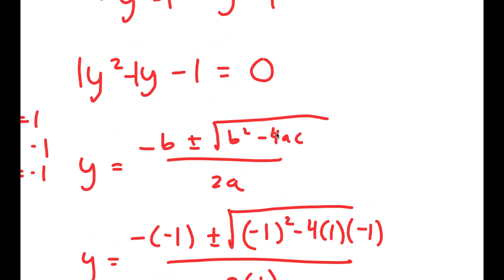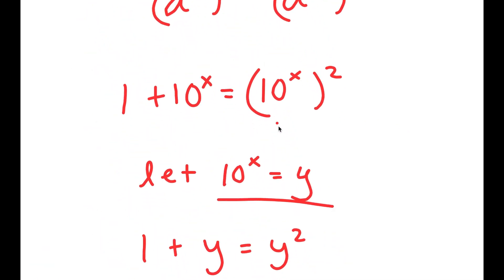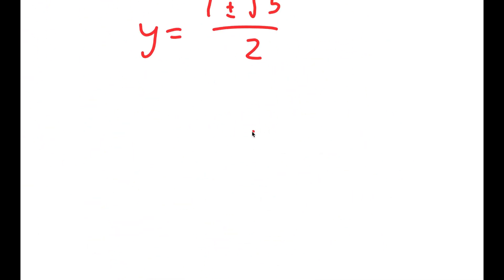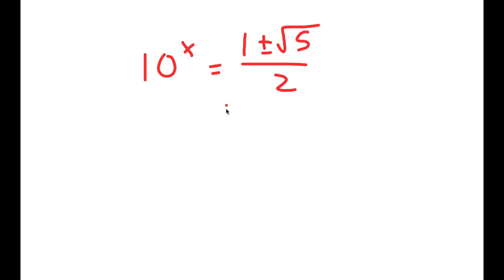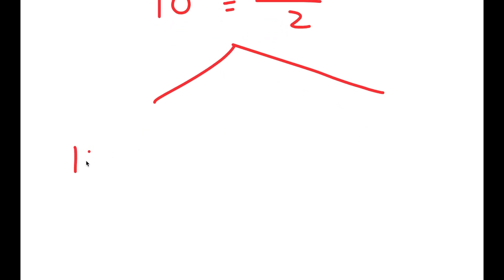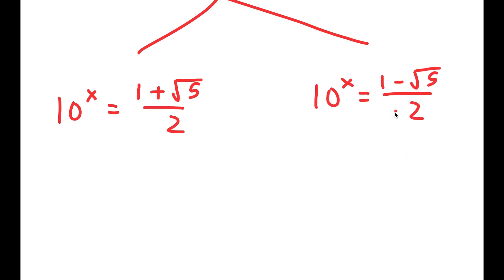However, we aren't done yet, because remember we're solving for the value of x and not y. We let 10 to the power of x equal to y, so 10 to the power of x equals 1 plus or minus the square root of 5 over 2. I'm going to first start with 10 to the power of x is equal to 1 plus the square root of 5 over 2.